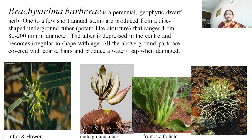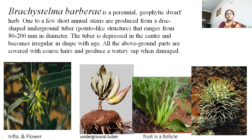The tuber of Brachistelma becomes depressed in the center and irregular in shape with age. All above-ground parts are covered with coarse hair and produce watery sap when damaged. The fruits are follicles — this is the fruit, flower, and inflorescence of this plant.